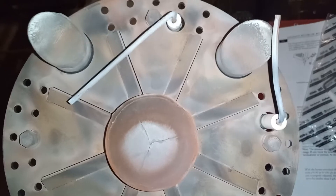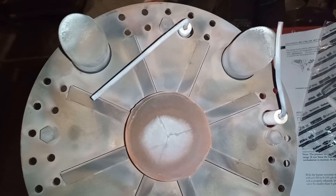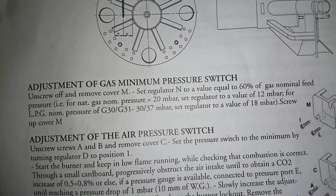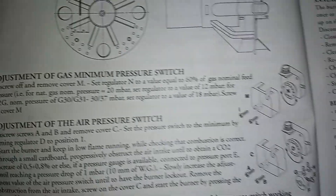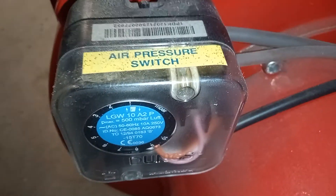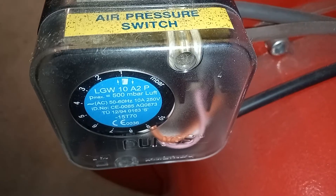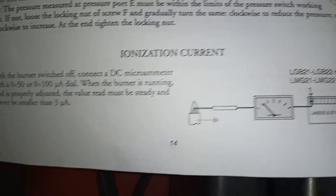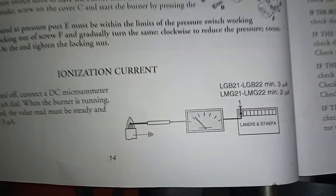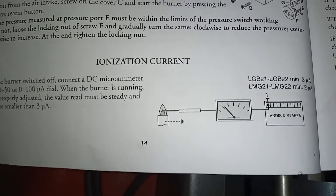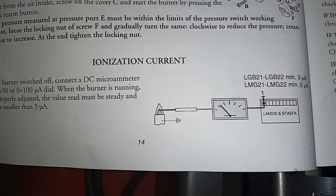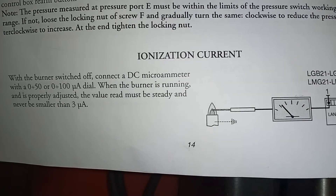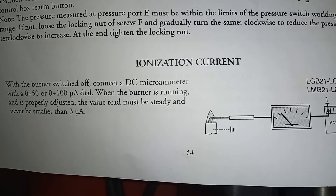Okay, so going to change these probes. And then down here you have adjustment of gas minimum pressure switch. And here is the air pressure switch. And then we also have ionization current — what is expected. You may have seen one of my videos on how to check the ionization current and check the flame strength, and it shows you the micro amps.